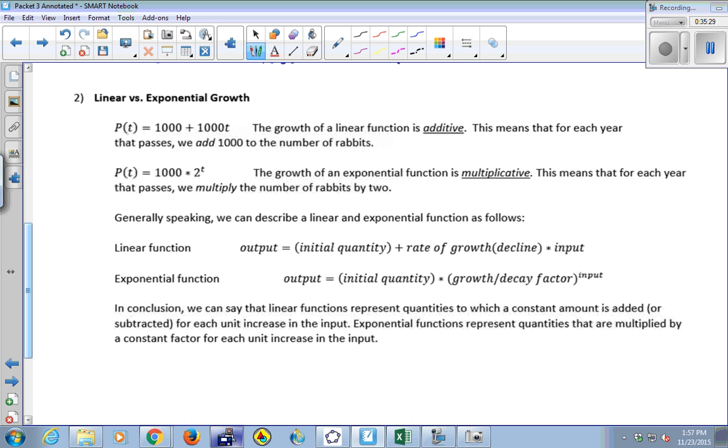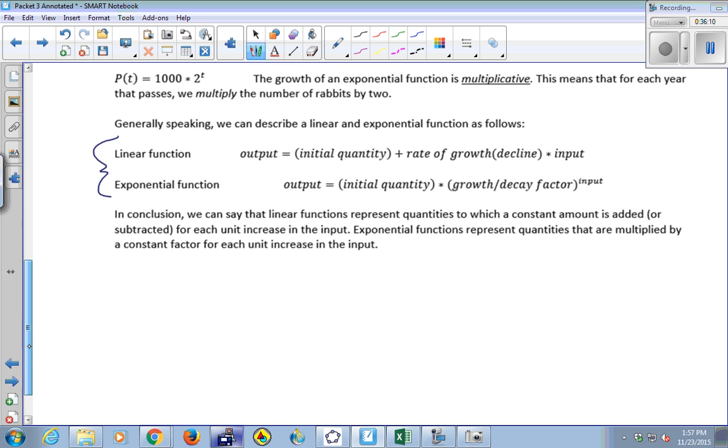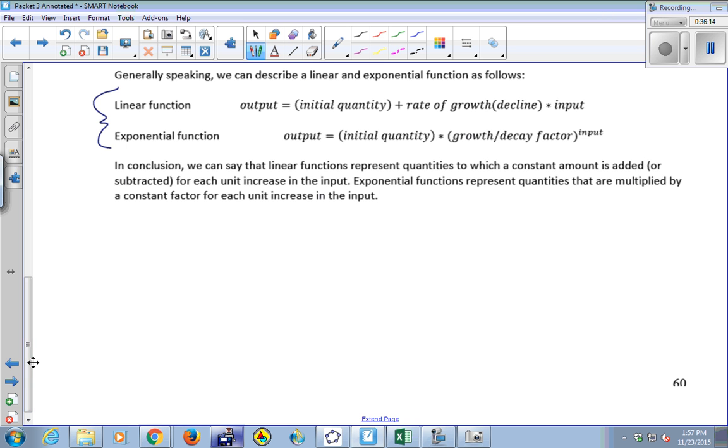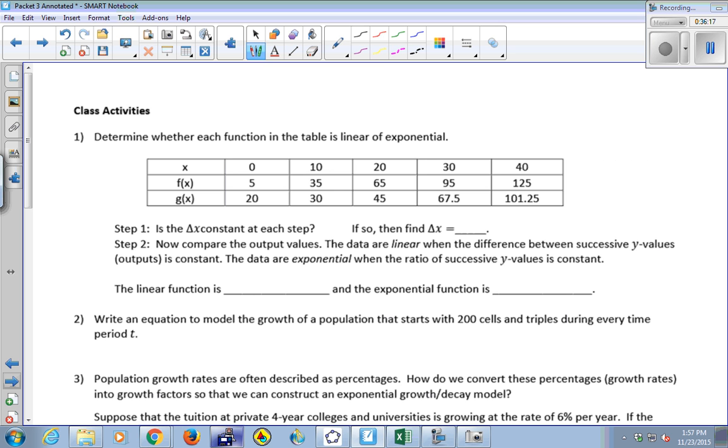So to summarize, the growth of a linear function is additive. You're always adding the same amount, like when we add 1,000 rabbits every year. The growth of an exponential function is multiplicative. So each year that passes, you multiply by the same number. So here's some general formulas for linear and exponential functions. Linear functions, your output, you start with some initial quantity, and you add your rate of growth times your input. For exponential, you start with some initial quantity, and you multiply by a growth or decay factor, and you raise it to the amount of time that has passed. All right. So if you finish the previous activities, you should start these. If not, you can pick up where you left off.